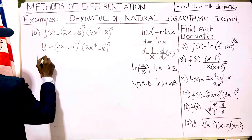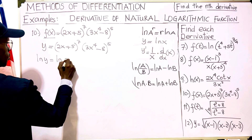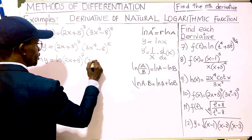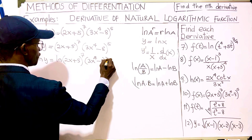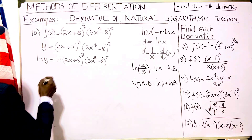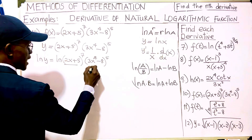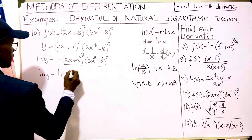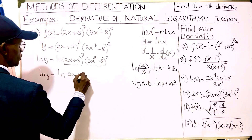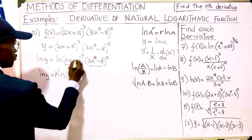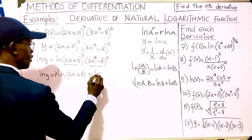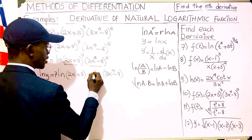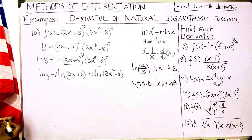So ln(y) equals ln[(2x + 5)⁷ · (3x⁴ − 8)⁵]. Using ln(a·b) equals ln(a) plus ln(b), we get ln(y) equals 7·ln(2x + 5) plus 5·ln(3x⁴ − 8), bringing the exponents down.